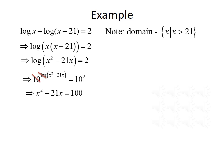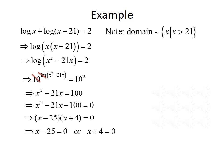Now this is just a quadratic. We can solve it the way we would solve any quadratic. First, get all numbers on the same side by subtracting 100 from both sides, giving us x squared minus 21x minus 100 equals 0. We can factor this as (x minus 25)(x plus 4) equals 0. Setting each factor equal to zero gives x minus 25 equals 0 or x plus 4 equals 0, so x equals 25 or x equals negative 4.